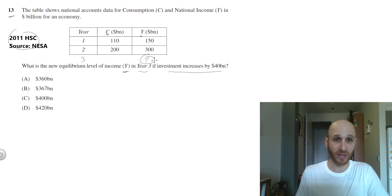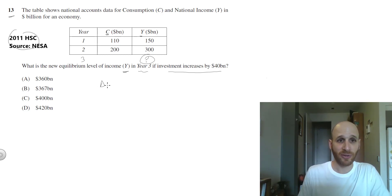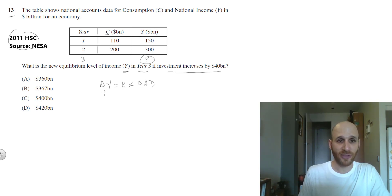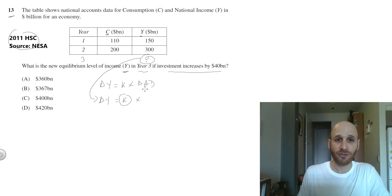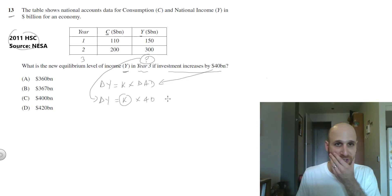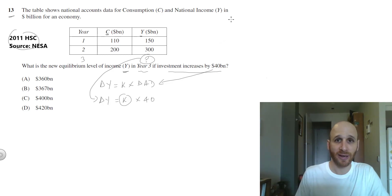Let's set out some of the relevant formulas. I know that the change in income is going to equal the multiplier times the change in aggregate demand. What I know here is that our change in Y is what we want to find, our multiplier we need to determine, and our change in aggregate demand is going to be a change in investment of 40 billion dollars. Now I need to think: how do I get K?